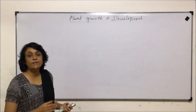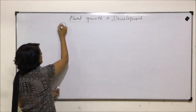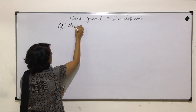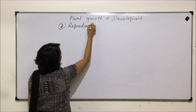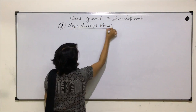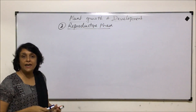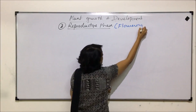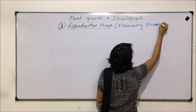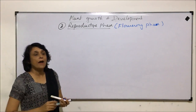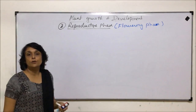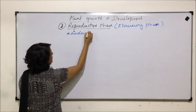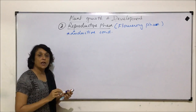Let us now talk about the second phase of plant development. The first phase was germination where vegetative growth takes place, and the second is the reproductive phase, which can also be termed as the phase when the plants are going to produce flowers. This is also known as the flowering phase. The conditions which are required for this reproduction to take place, or for flowering to take place, are known as inductive conditions.